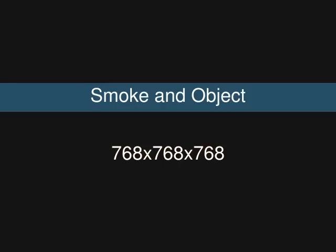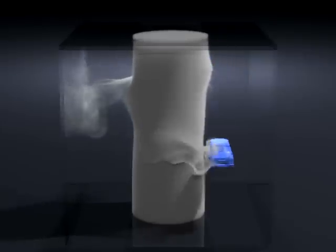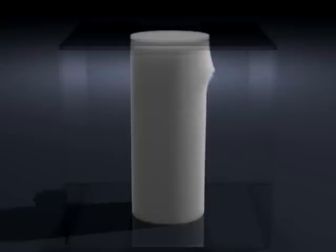Here we show a moving object displacing a cylinder of smoke. Our method is able to efficiently handle the changing Poisson matrix needed for the moving Neumann boundary conditions.